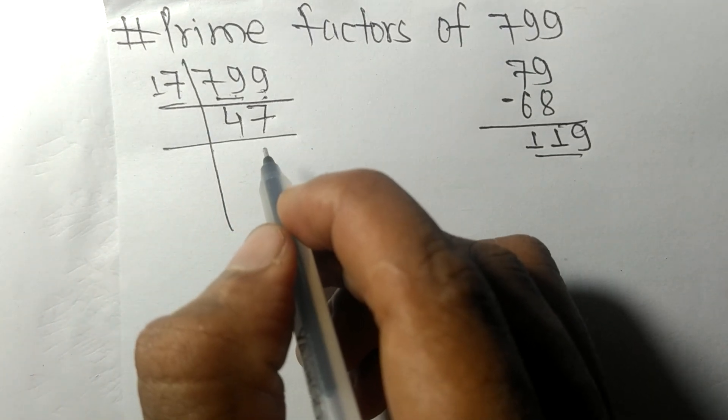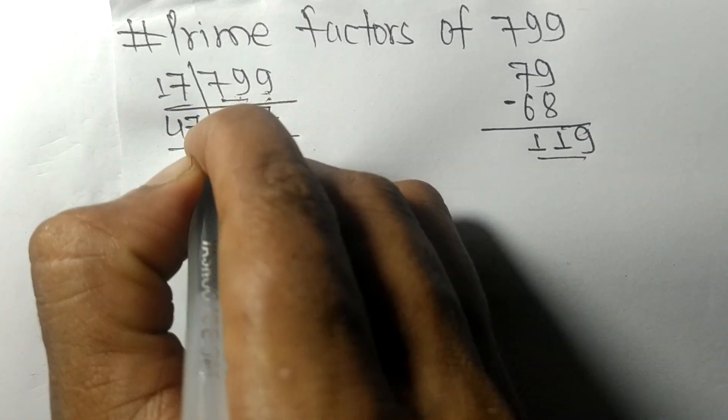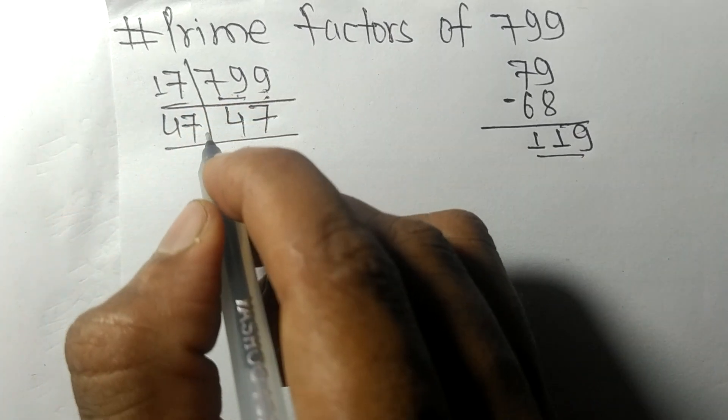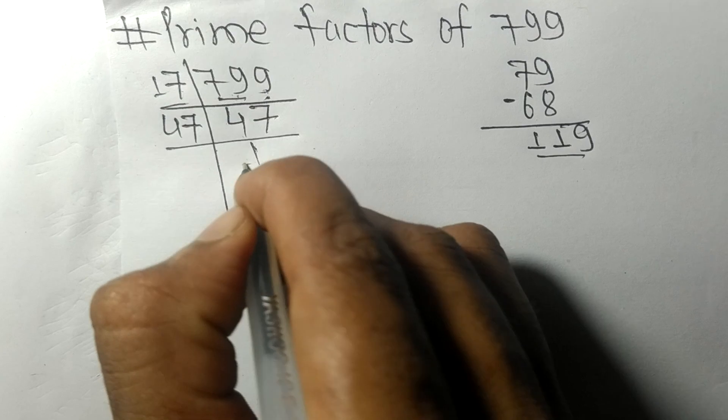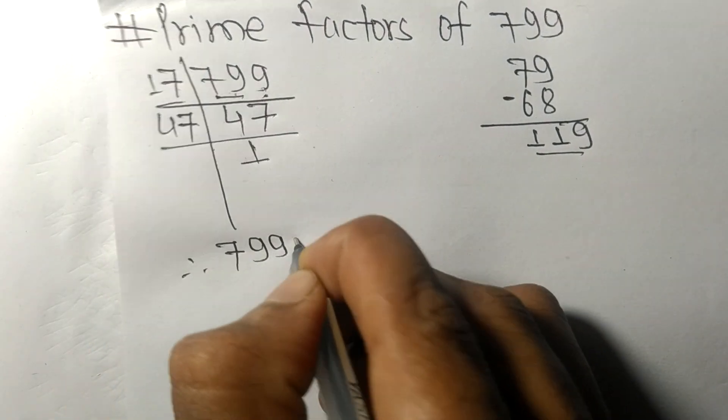So now 47 is a prime number, so it is exactly divisible by 47 only. On dividing we get 1.